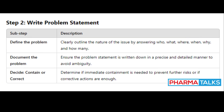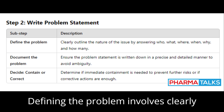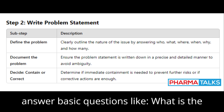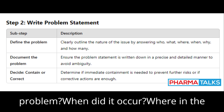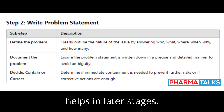Stage 2: Write Problem Statement. Step 1: Define the Problem. Defining the problem involves clearly outlining the issue. It's important to answer basic questions like: What is the problem? When did it occur? Where in the process did it happen? This clarity helps in later stages.